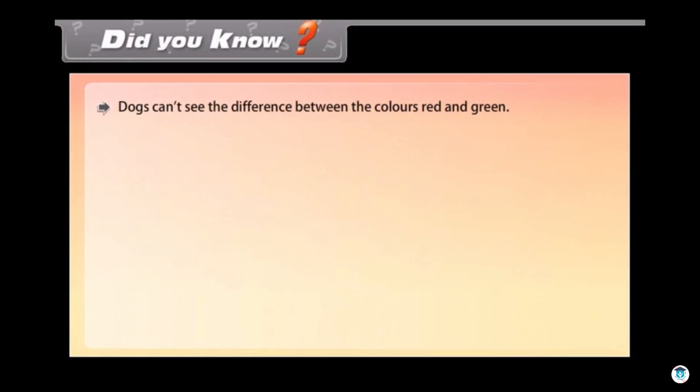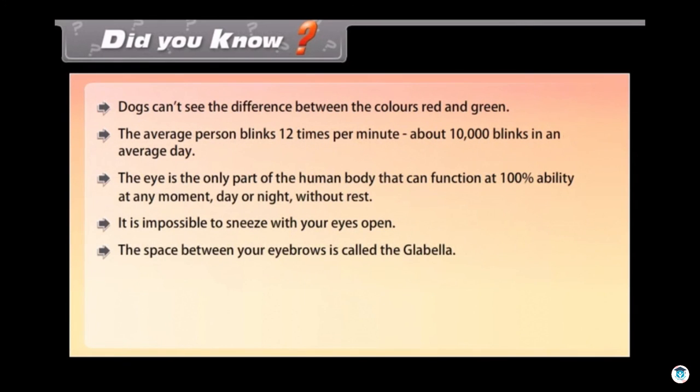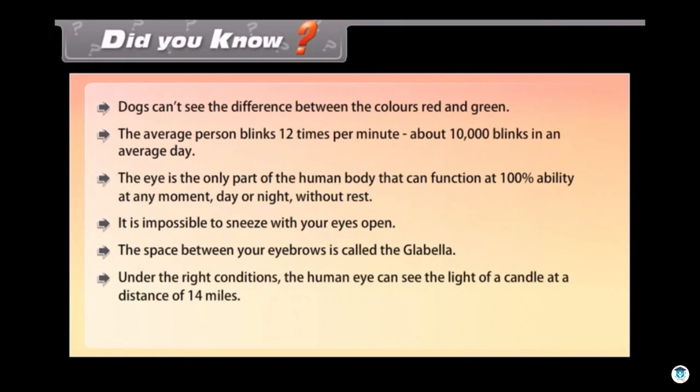Dogs can't see the difference between the colors red and green. The average person blinks twelve times per minute, about ten thousand blinks in an average day. The eye is the only part of the human body that can function at hundred percent ability at any moment, day or night, without rest. It is impossible to sneeze with your eyes open. The space between your eyebrows is called the glabella. Under the right conditions, the human eye can see the light of a candle at a distance of fourteen miles. People generally read twenty five percent slower from a computer screen than from paper.